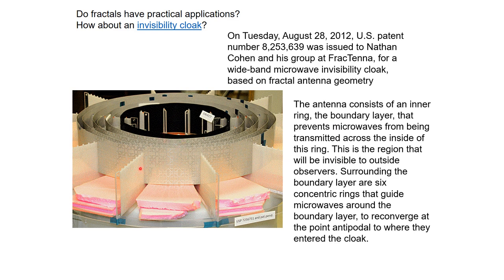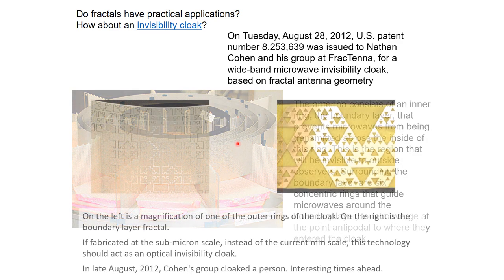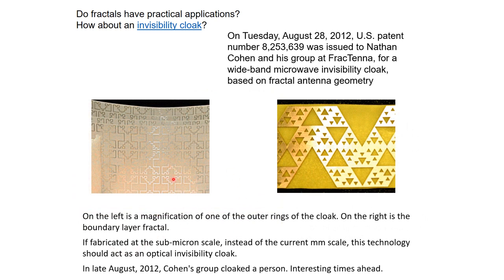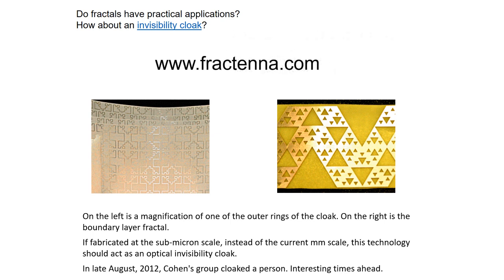If fabricated at the sub-micron scale — right now it is millimeter scale, so it can only make smaller things invisible — but if you make this at a sub-micron scale, then this technology should act as an optical invisibility cloak. Right now it is a microwave invisibility cloak, but the same principle will apply to an optical invisibility cloak. In late August 2012, Cohen's group cloaked a person. You can find the details at www.fractenna.com.